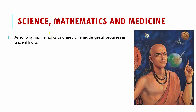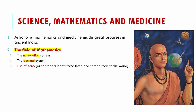Astronomy, mathematics, and medicine made great progress in ancient India. In mathematics, Indians introduced the numeration system and excelled at the decimal system. The use of zero was also started in India, thanks to Aryabhata. Arab traders learned these three mathematical systems and helped spread them throughout the world.